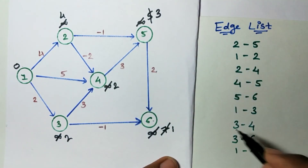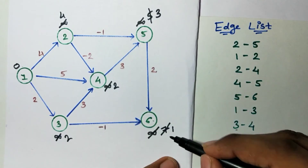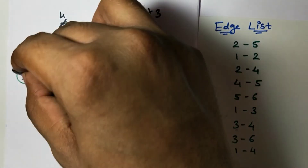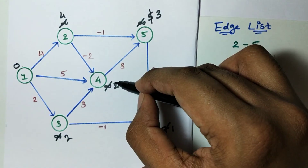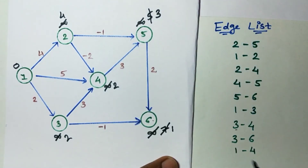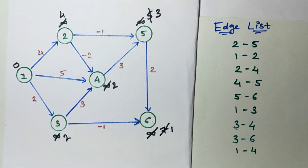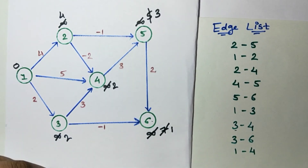Edge 3 to 4: 2 plus 3 is 5, greater than 2, don't change. Edge 3 to 6: 2 minus 1 is 1, don't change. Edge 1 to 4: 0 plus 5 is 5, greater than 2, don't change. In iteration 3, not a single node is affected, so this is our final answer. No need to perform further iterations.